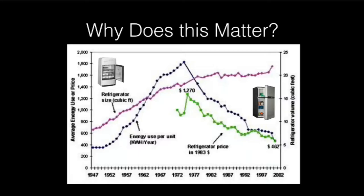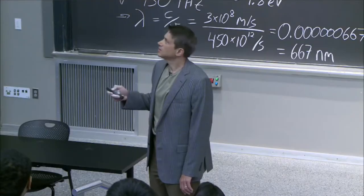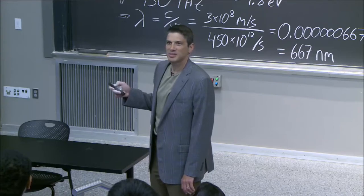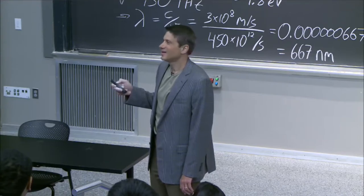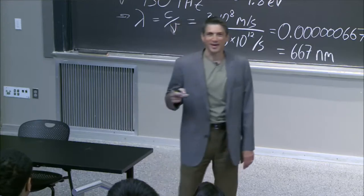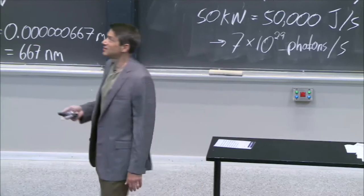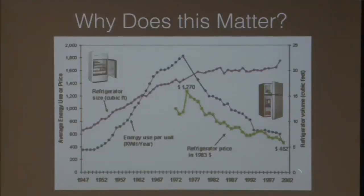Does anybody know what's limiting the size of the refrigerator? Look, it's going up and up and up a lot, and then it stopped. Anybody know what limits that? It's the width of the doorway. That's why people get a second refrigerator, right?